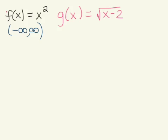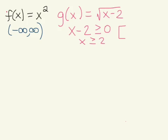The next one, g(x), is a radical function. With radicals, we have to make sure that we don't end up with negative numbers under the radical sign. So whatever you have under your radical sign — called your radicand — you set that greater than or equal to 0. That means x has to be greater than or equal to 2, so the domain for g is from 2 to positive infinity.